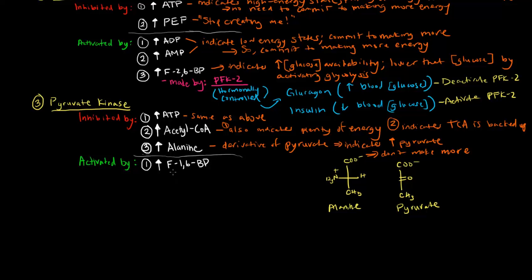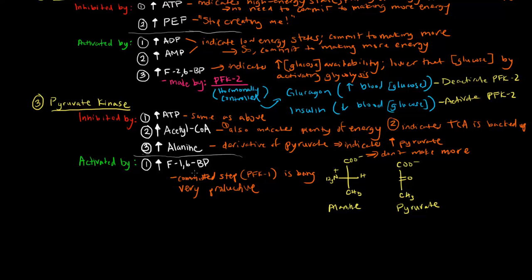High levels of fructose 1,6-bisphosphate activate pyruvate kinase. This means the committed step — the PFK1 step — is being very productive and we're committing to glycolysis a great deal. We don't want to get to phosphoenolpyruvate and have pyruvate kinase be unable to proceed. If we're committing to glycolysis, we want to make sure we finish it. So it makes sense that high levels of the committed molecule would activate the completion of glycolysis.